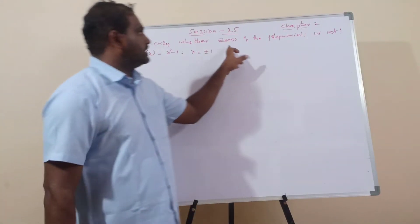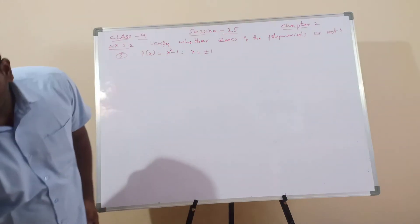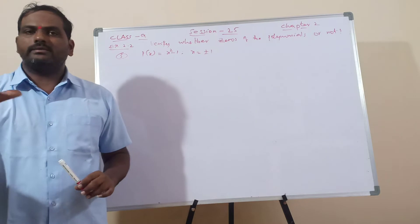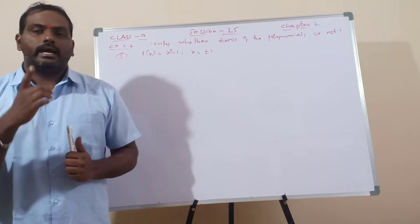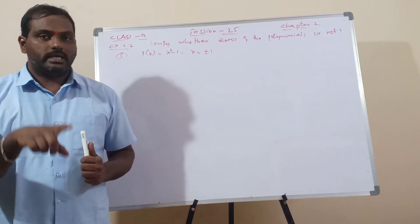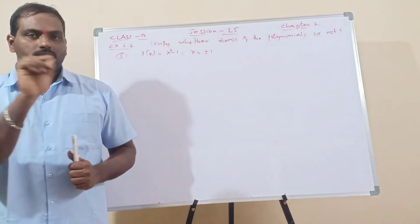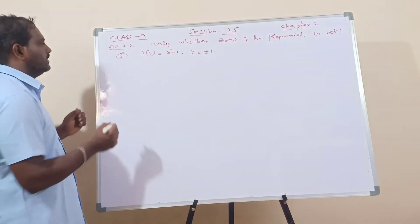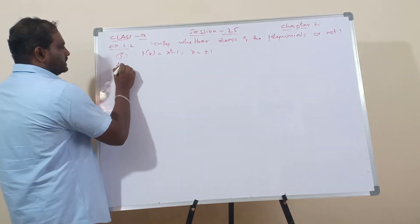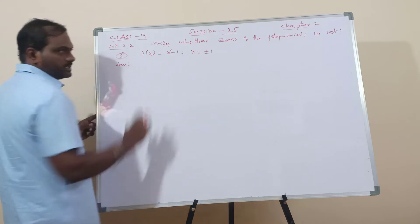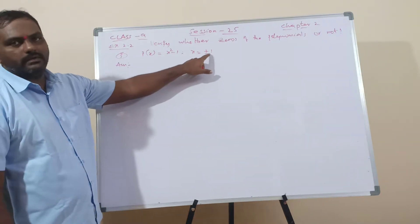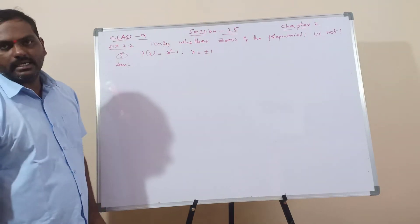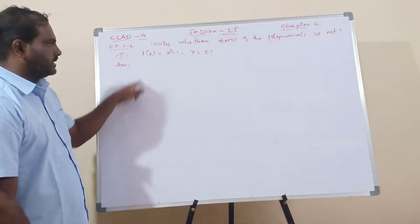Since it is a continuation, what is the zero of the polynomial? He will give one polynomial and one value. We have to substitute that value, and if we get zero, then we can say that it is the zero of the polynomial. If it is not zero, then we say it is not a zero of the polynomial. So we have to substitute the given value in the given polynomial — if we get zero, then that is a zero of the polynomial.